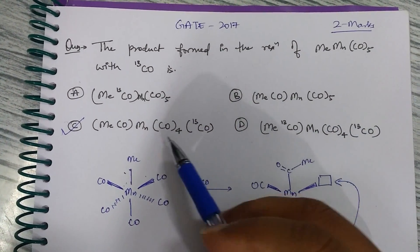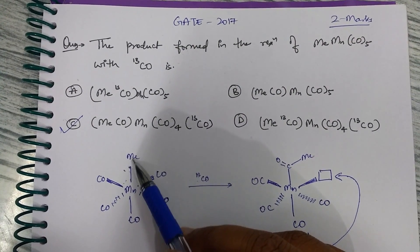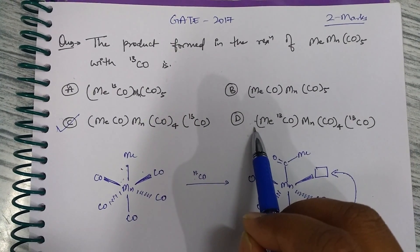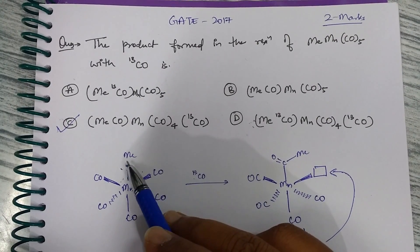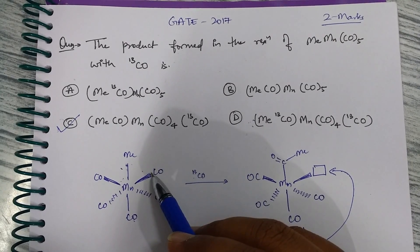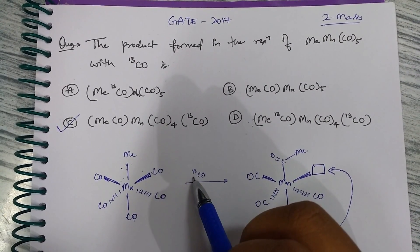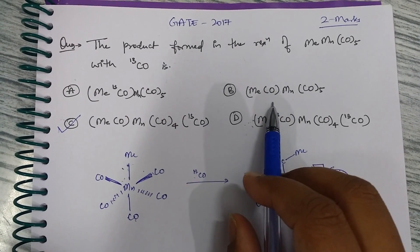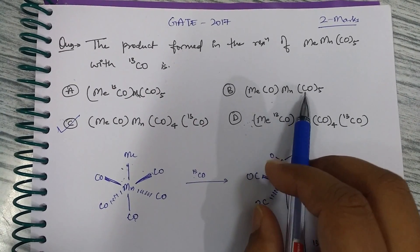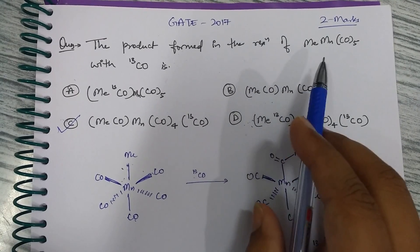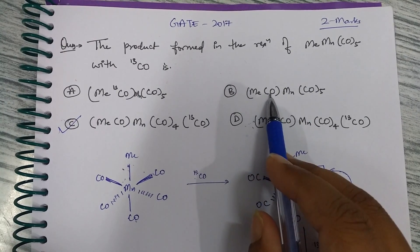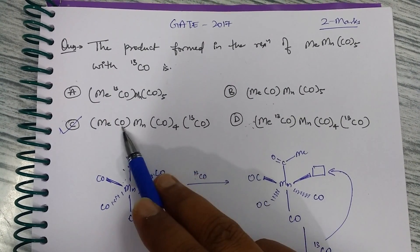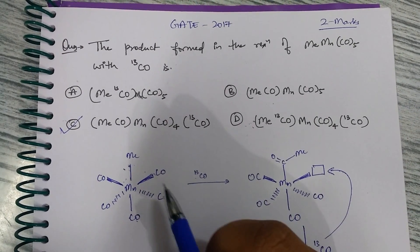We can verify by elimination. Since ¹³CO always enters at the cis position and never trans, any option showing ¹³CO trans to the acyl group is eliminated — that rules out two options. Among the remaining two, one option illogically generates an extra CO from ¹³CO, which makes no sense, so that is also eliminated. The only remaining option is C, where ¹³CO is at the cis position and the product is chemically logical.